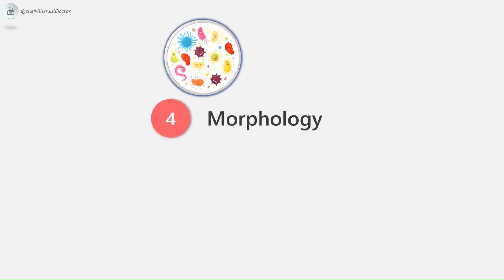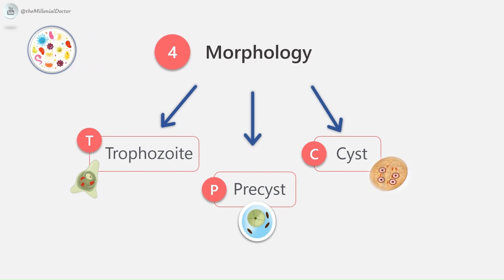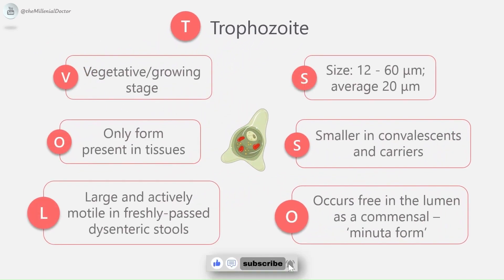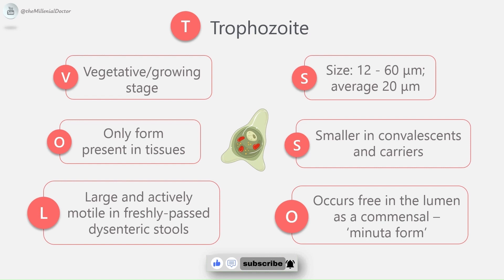Morphologically, Entamoeba histolytica occurs in three forms: trophozoite, pre-cyst, and cyst. The trophozoite is the vegetative or growing stage and the only form present in tissues. It is irregular in shape, varying from 12 to 60 micrometers, averaging 20 micrometers. It is large and actively motile in freshly passed dysenteric stool, while smaller in convalescence and carriers. As a commensal in the lumen, it is about 15–20 micrometers and is called the minuta form.